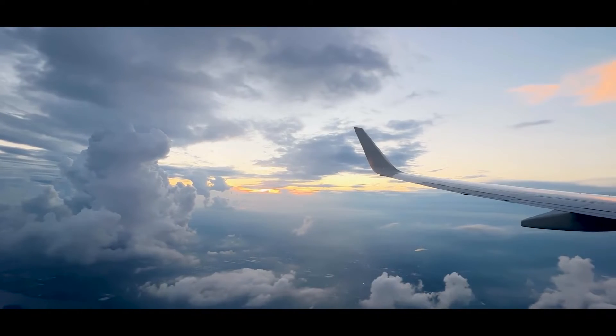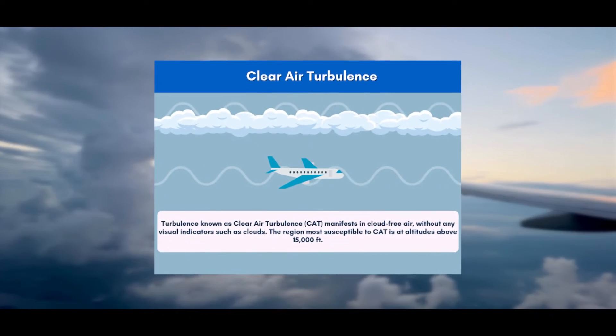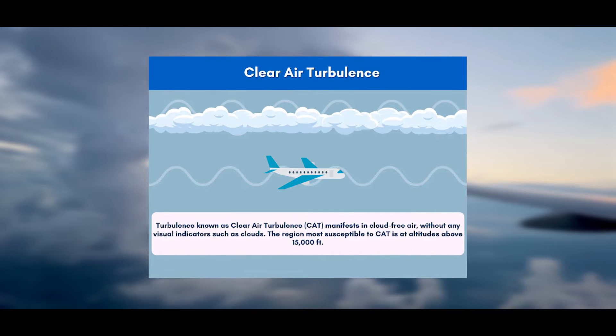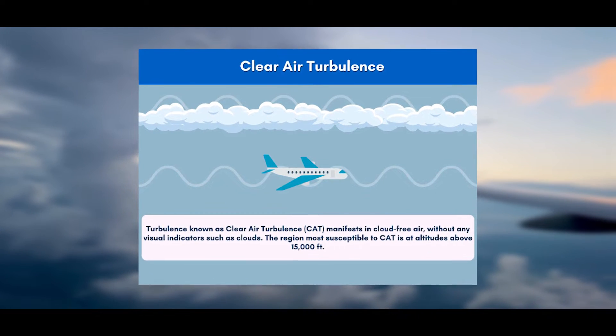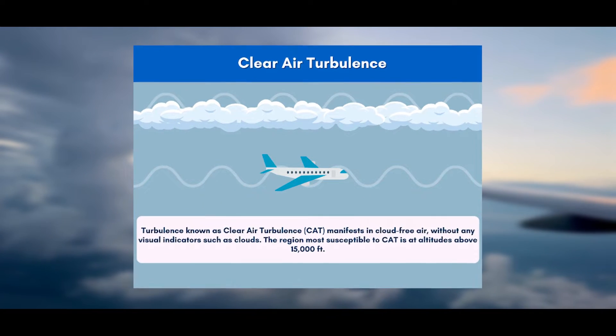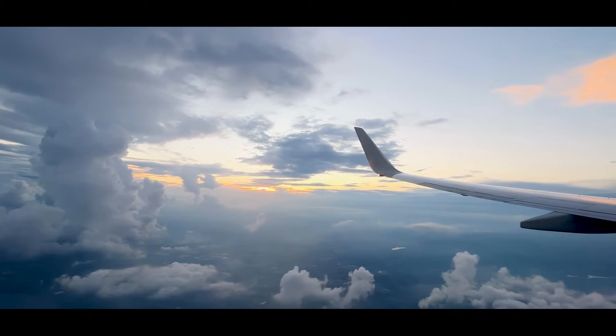Clear air turbulence occurs at altitudes above 15,000 feet mean sea level and is caused by strong wind shears in the jet stream.